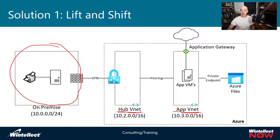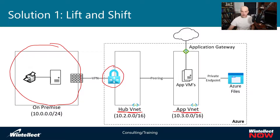You use VNet peering between the app VNets — your spokes — back to the hub. The hub contains shared resources that applications might use, such as a VPN connected to on-premise. What I did is I stood up that hub VNet, set up an Azure virtual network gateway, and then established a VPN connection back to my on-premise firewall. Once that's all set up, I can route traffic between on-premise and Azure as if they were part of the same local area network.